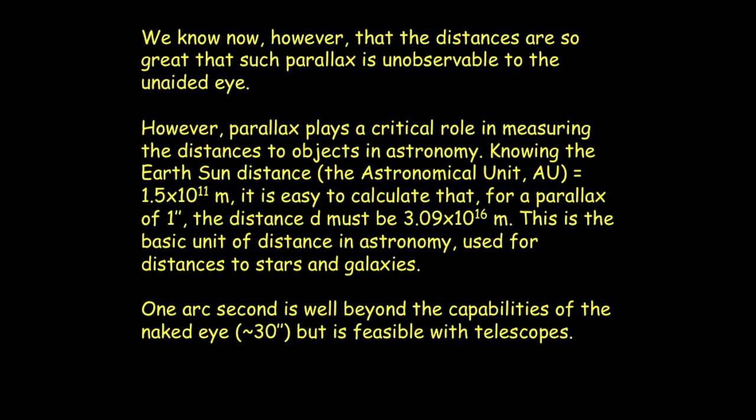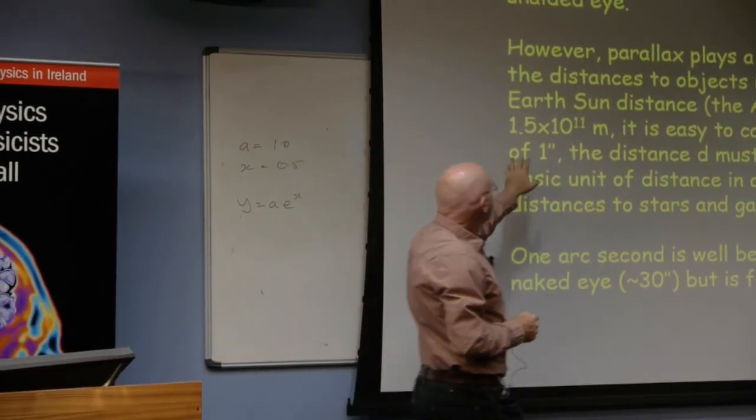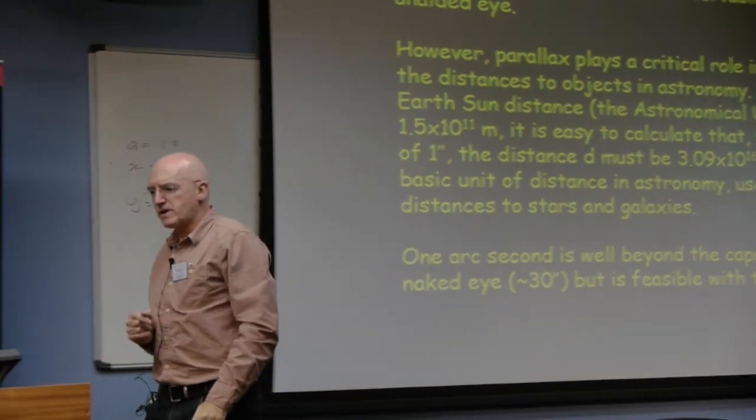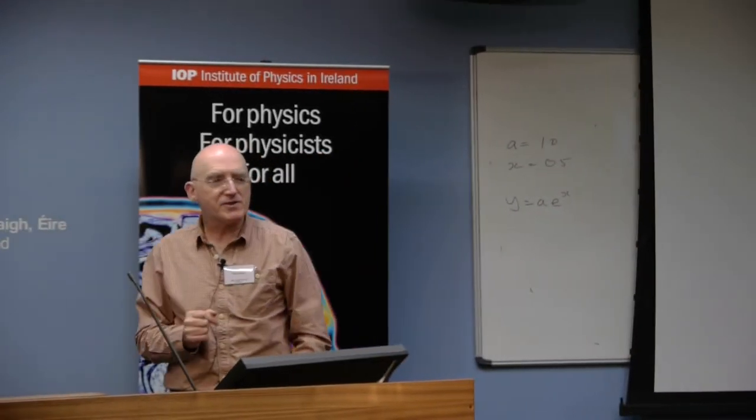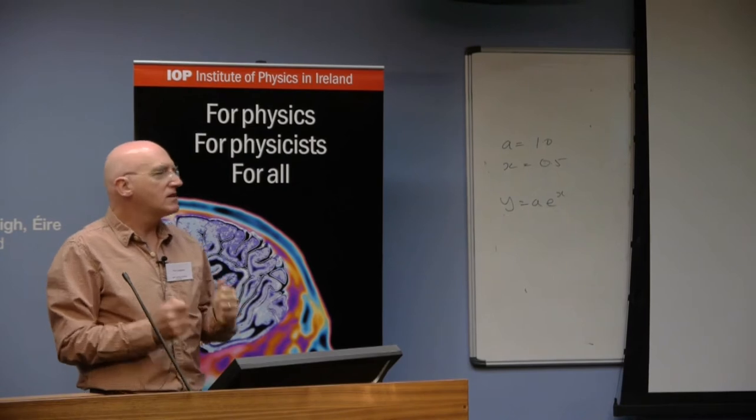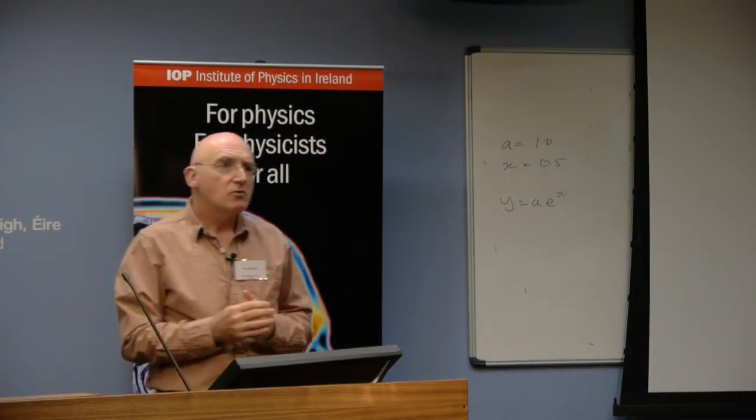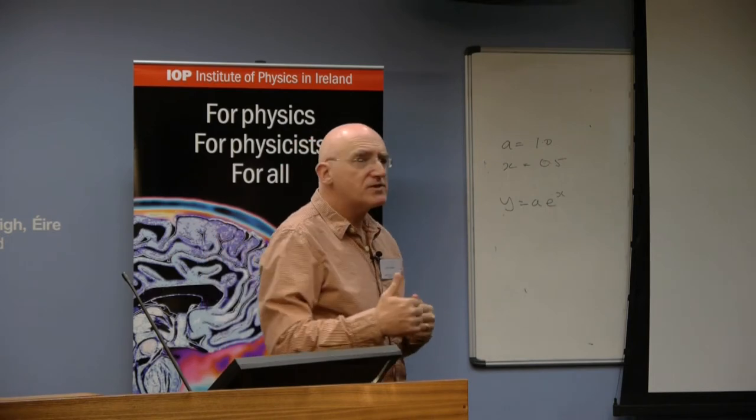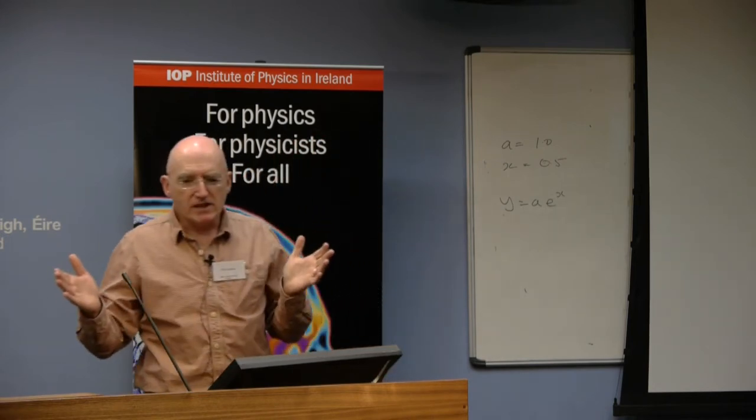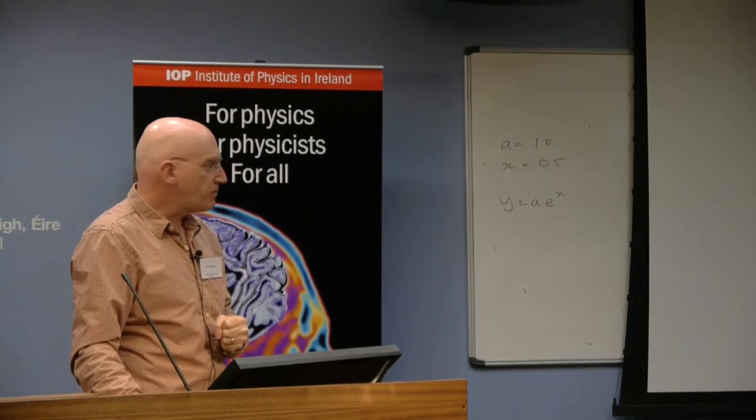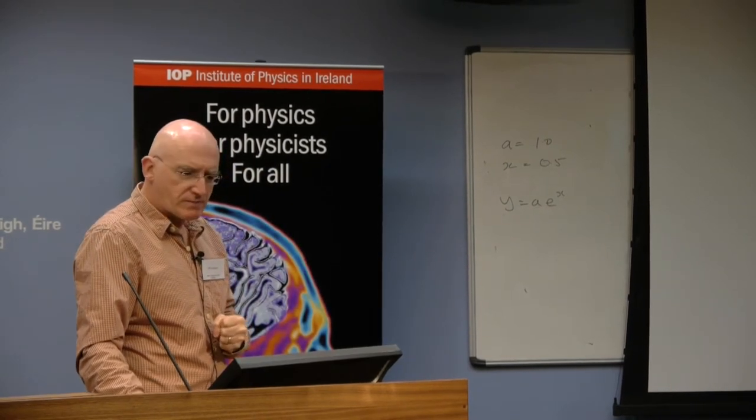I've included here some of the numbers that explain why for a parallax of one arc second, knowing the Earth-Sun distance, we can compute the typical distance to the nearby stars. That unit is called the parsec, and it is really the fundamental unit of distance measurements for astronomy generally, whether we're talking about distances to nearby stars, to the length scale of our own galaxy, or the distances to more distant ones. This unit of the parsec is based on this parallax.